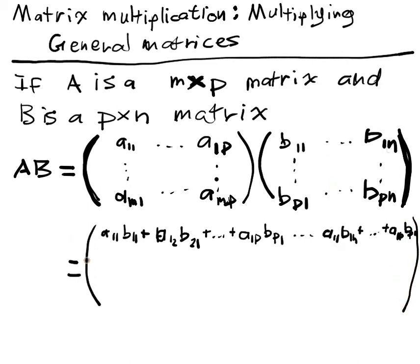Getting near the end there so I'll try to write a little bit smaller. And then we keep going through that and then the entry here is going to be Am1 B11 plus Am2 B21 plus all the way up to Amp Bp1. And the last entry in this row is going to be Am1 B1n all the way up to Amp Bpn.